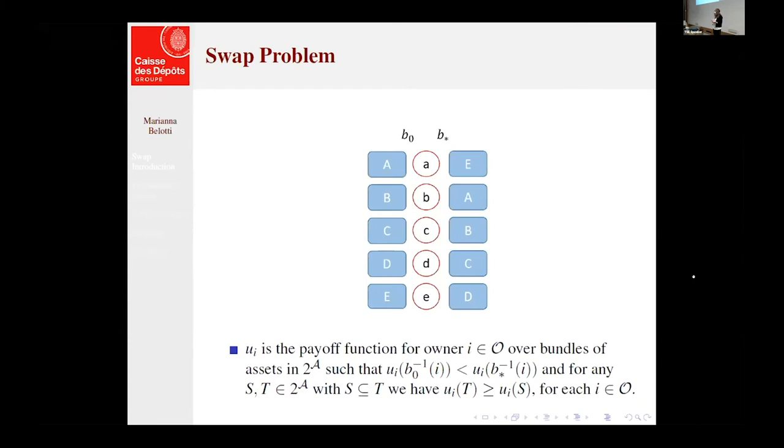We can define the first configuration, the original one, and the desired one that we want, the assets involved, the owners involved, but what we need is a measure of the happiness of the owners, evidently, the swap participants, and we need a classical utility function that is monotonic. And of course, the player is happier if he has more assets with respect to having less.